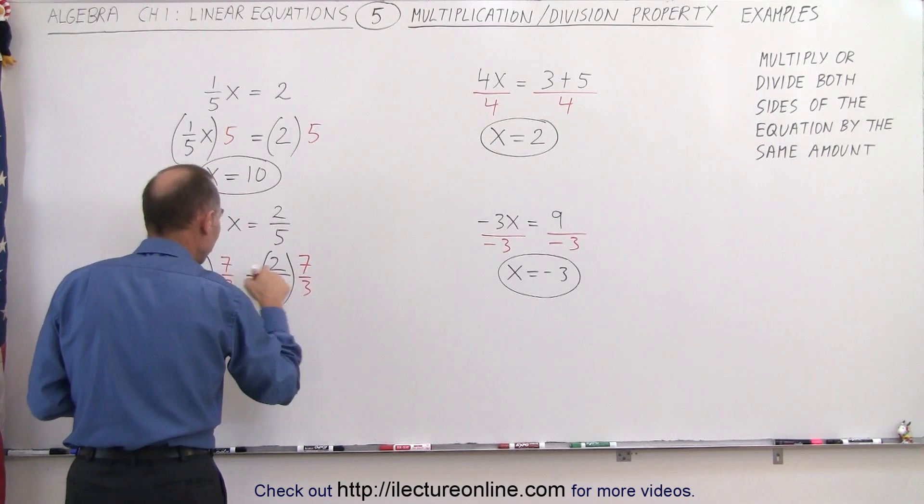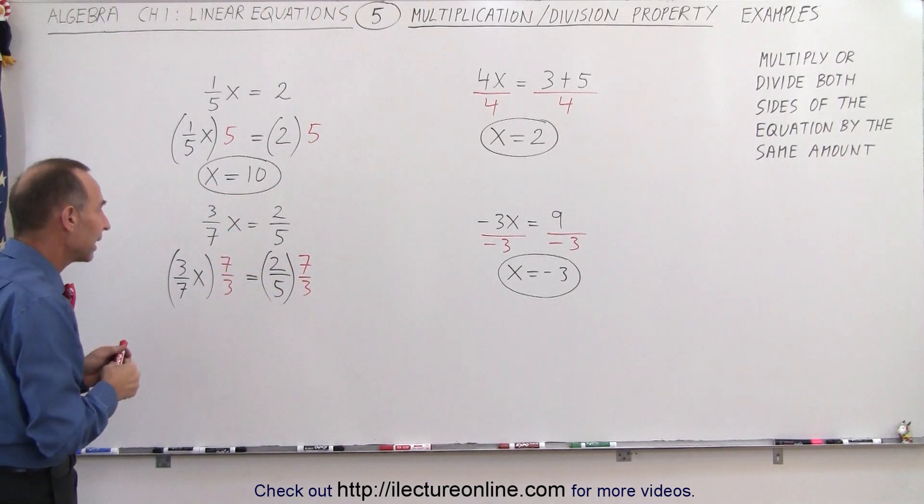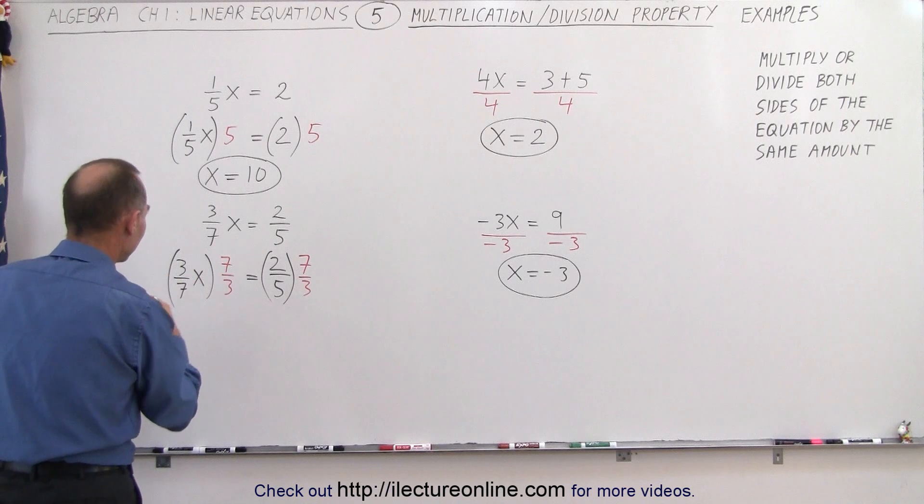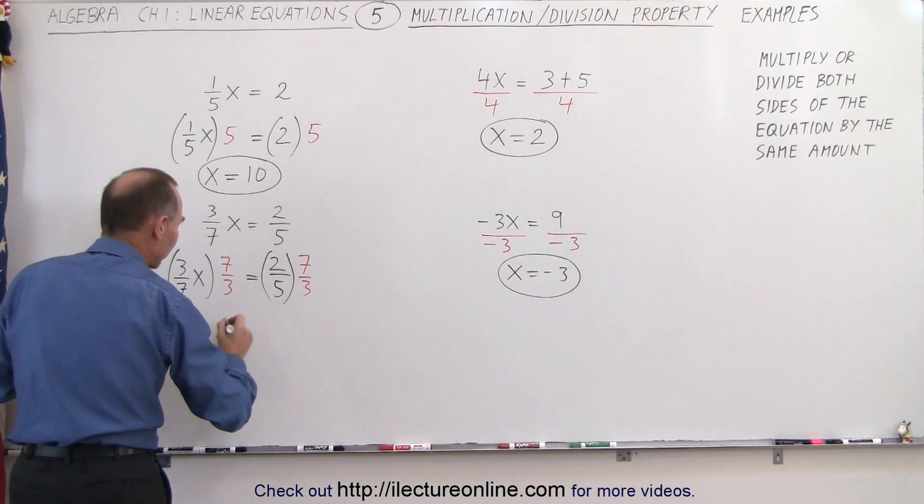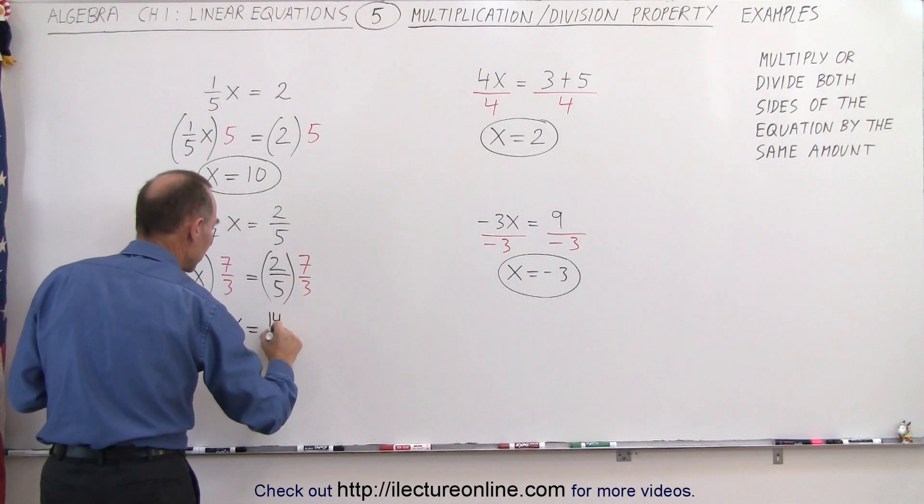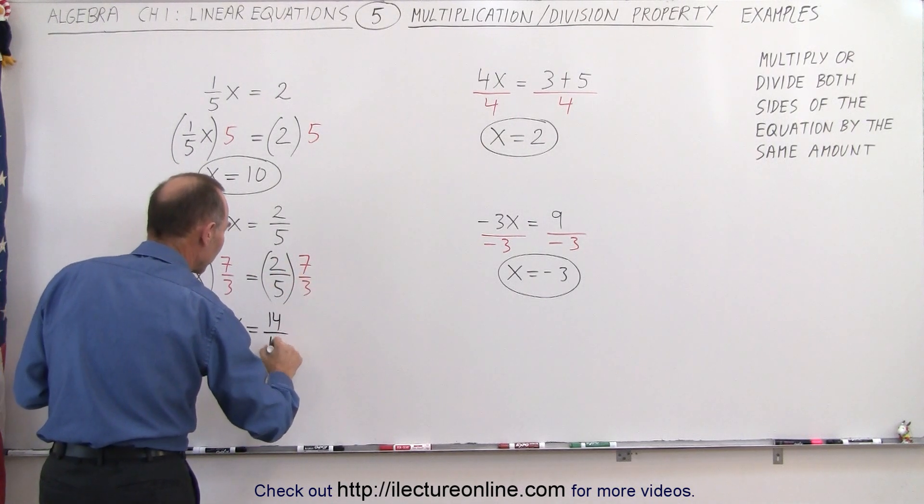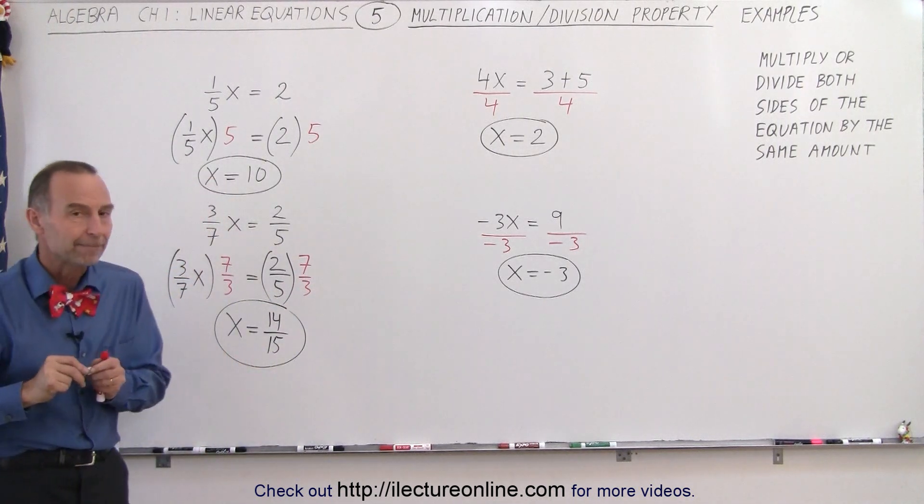Again, I don't have to put any symbol in there indicating I'm multiplying, that is assumed to be the case. And so here on the left side, 3 over 7 times 7 over 3 is 1. So I end up with x on the left side equals 2 times 7, which is 14, divided by 5 times 3, which is 15. So the value for x is equal to 14 over 15.